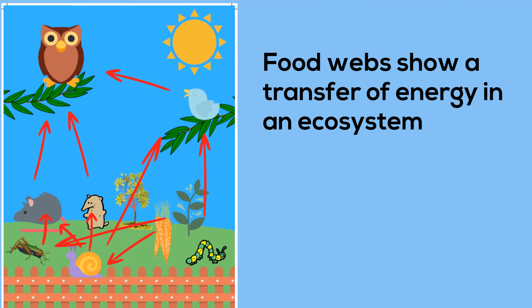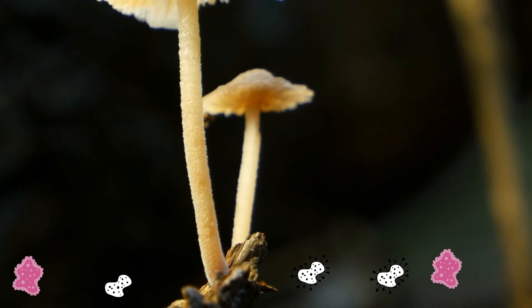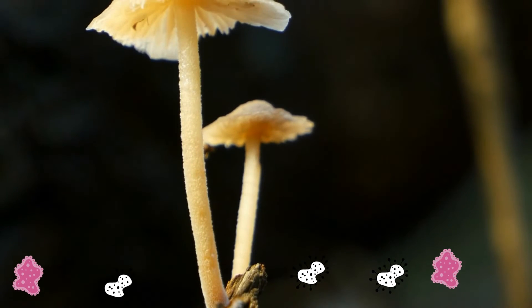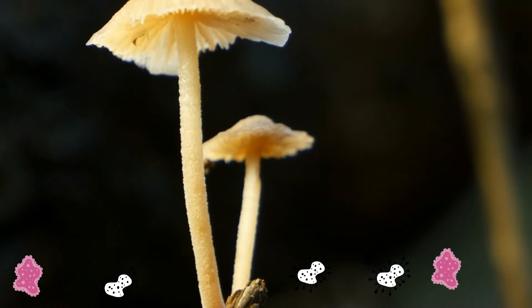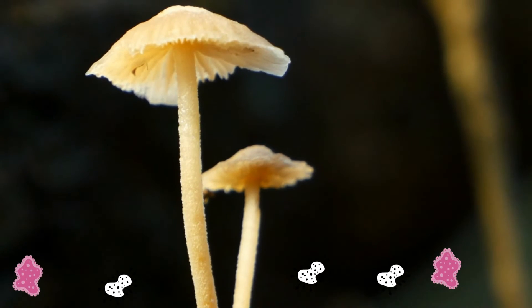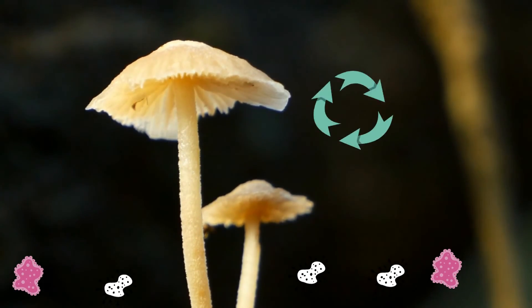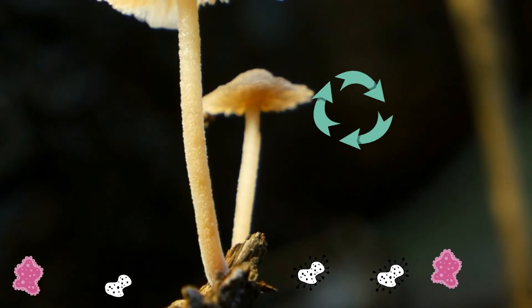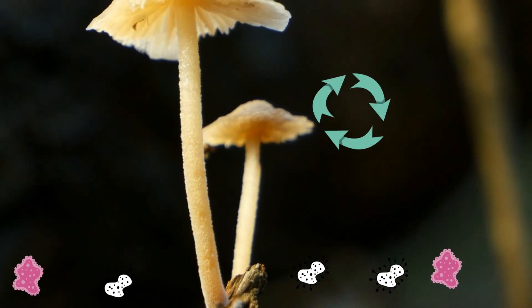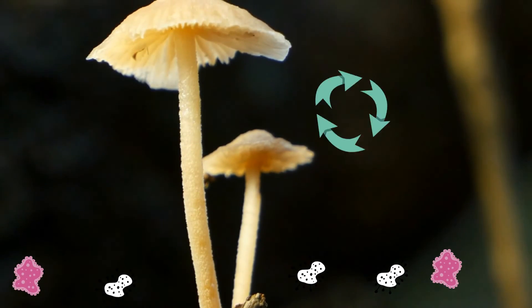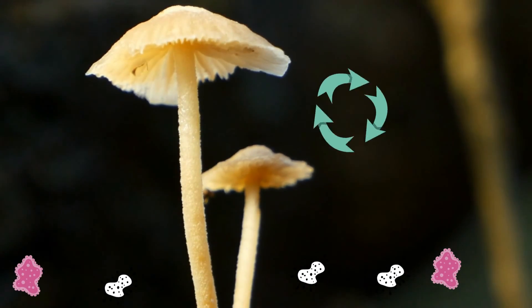The food web is a model that shows a transfer of energy in an ecosystem. In addition, there are decomposers like bacteria and fungi. They are breaking down once-living organisms, which recycles these materials. The plants, which are producers, absorb these recycled nutrients, and this way the nutrients are returned to the ecosystem.